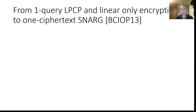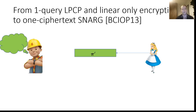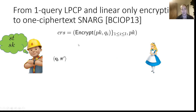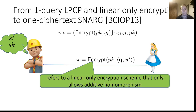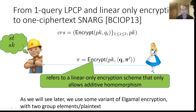What is the connection between linear PCP and SNARK? Bitansky et al. introduced a generic compilation from one-query linear PCP to one-ciphertext SNARK as follows. In the linear PCP world, the prover outputs proof π, and the verifier asks query q, gets the inner product of q and π, and decides whether to accept or reject. In the SNARK world, the preprocessing phase writes the encryption of all elements of q as a CRS with the public key. The prover computes the encryption of the inner product of q and π — possible because we use linear-only encryption, meaning an encryption scheme that allows only additive homomorphism and not other functions over the plaintext. The verifier knows the secret key, decrypts the answer, and calls the original linear PCP decision procedure. We use a variant of ElGamal encryption, meaning we need two group elements to encrypt one answer.